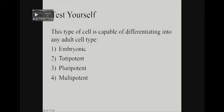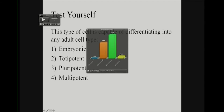Let's do a quick test here to make sure we're on the same page. What type of cell is capable of differentiating into any adult cell type? The answer is pluripotent — not totipotent. Totipotent embryonic cells can make the adult cells as well, but they also have this additional capability of making extra-embryonic cells. So the specific answer is pluripotent.